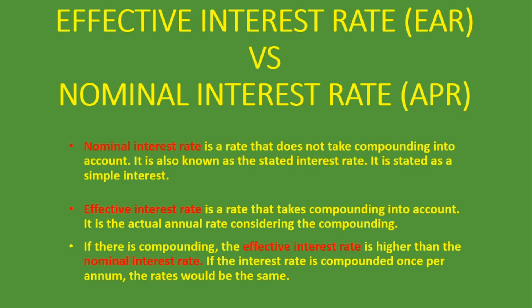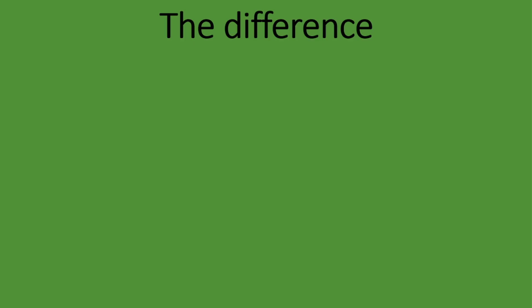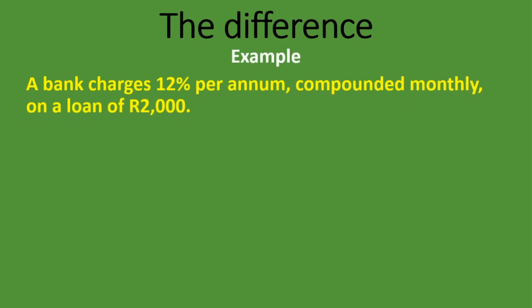Let's get into it to understand what we mean here. Here's the difference between the nominal interest rate and the effective interest rate. A bank charges 12% per annum compounded monthly on a loan of 2,000 rand. We are told it's 12% per annum and it's compounded monthly, so there are 12 periods being compounded.